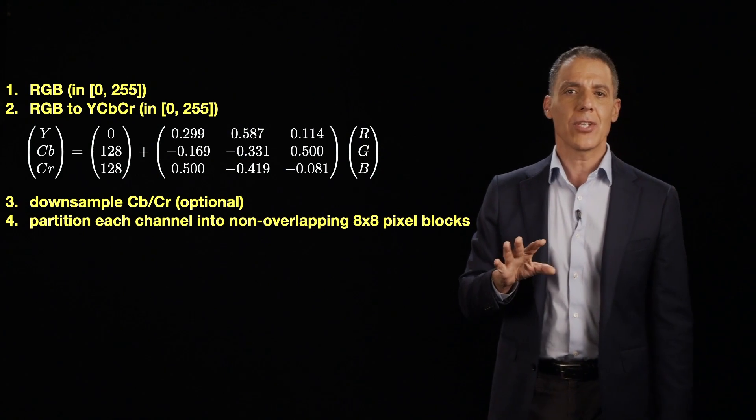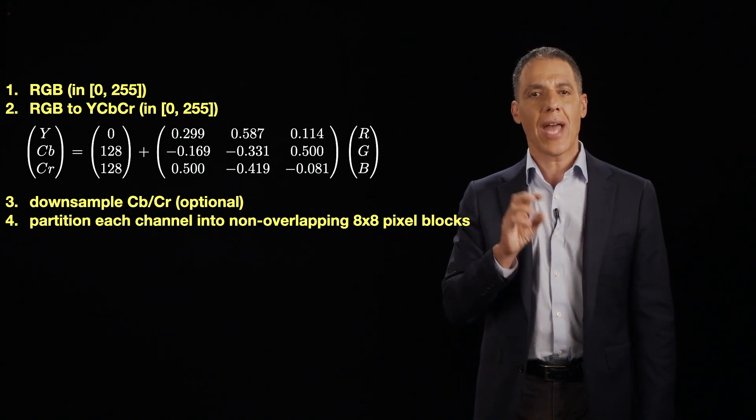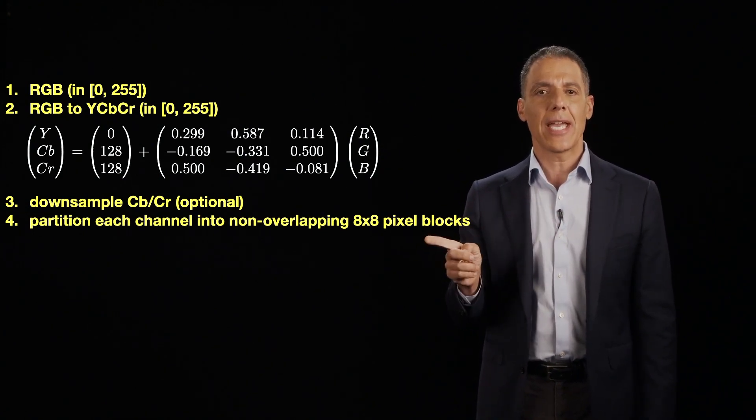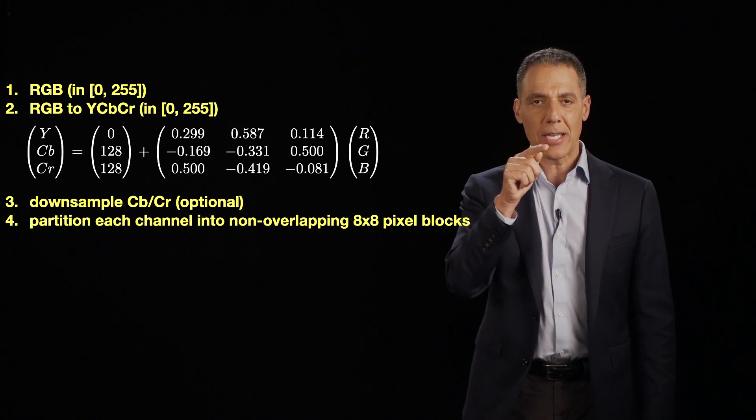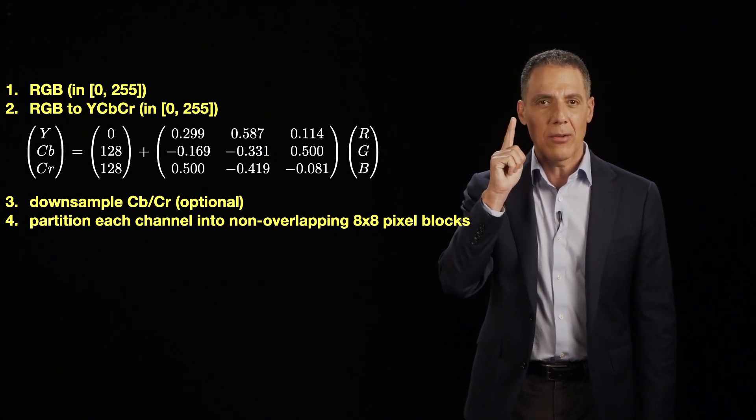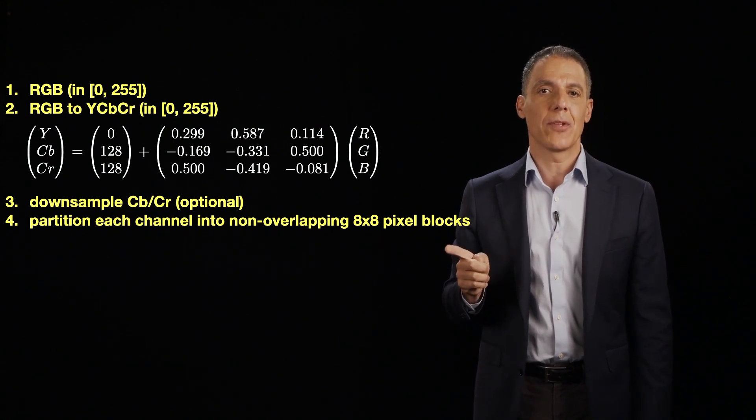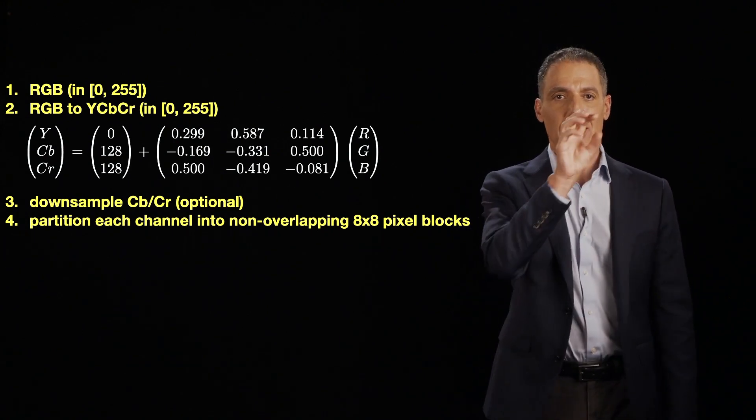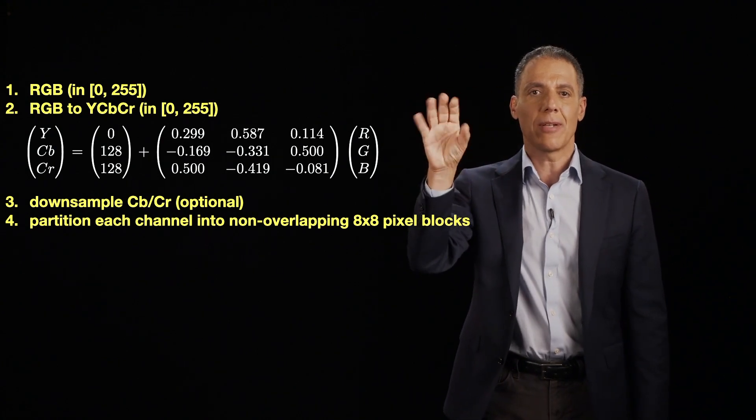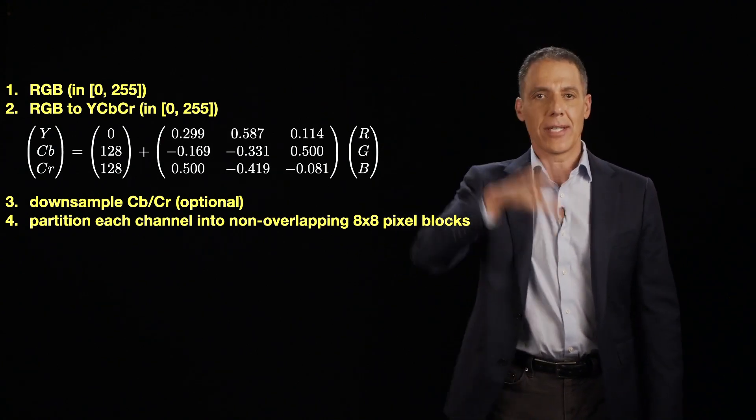Now what we're going to do is take the image and partition it into non-overlapping eight by eight pixel blocks. You got an indication right now where those blocking artifacts we saw earlier come from. It's going to come from this blocking that we do. So think about just tiling the image with these little eight by eight blocks, left to right, top to bottom.